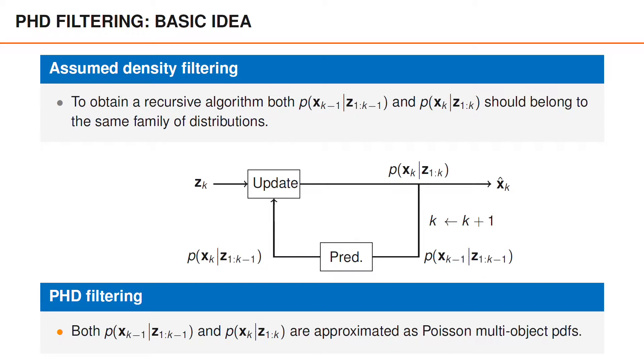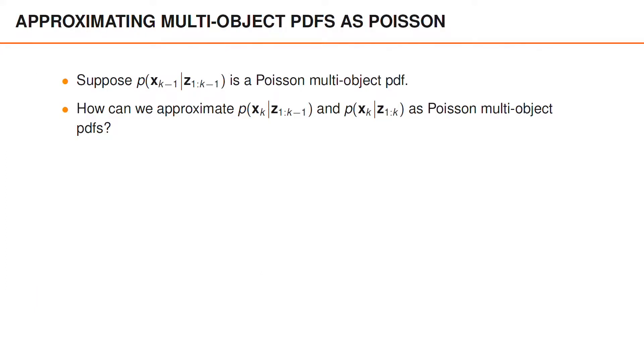The basic idea behind PHD filtering is to approximate the posterior as a Poisson point process distribution at the end of every recursion. We have previously mentioned that the Poisson point process is not good at capturing detailed information about, for instance, the cardinality, but the PHD filter instead has advantages due to its simplicity.